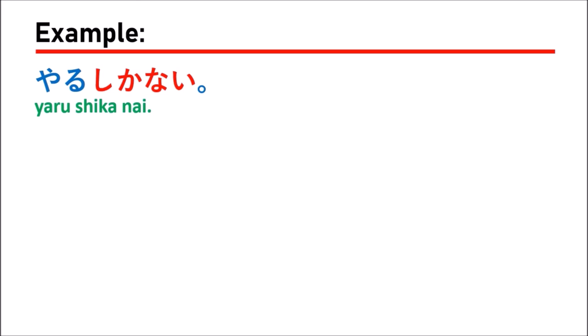The first example is やるしかない (yaru shikanai), which means 'you just got to do it.' This means you have to do it — if you don't, it cannot be completed or finished. So you have to do it.